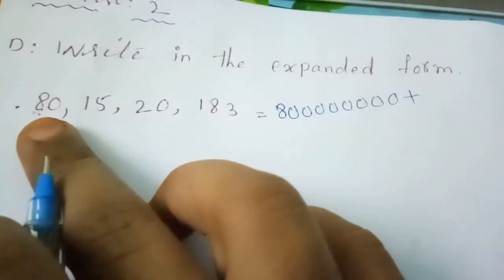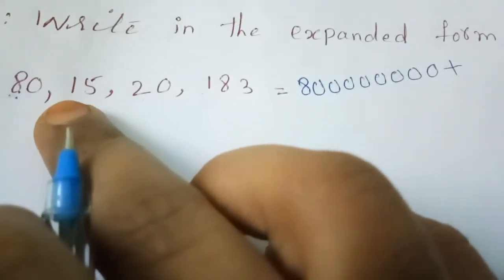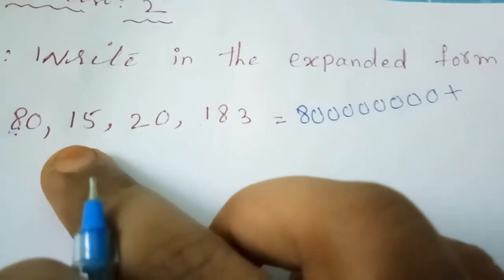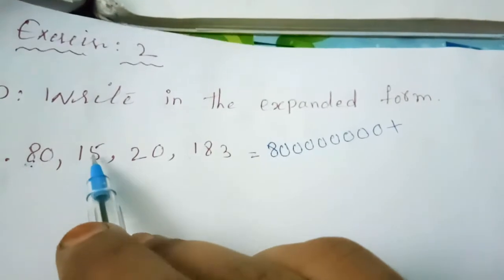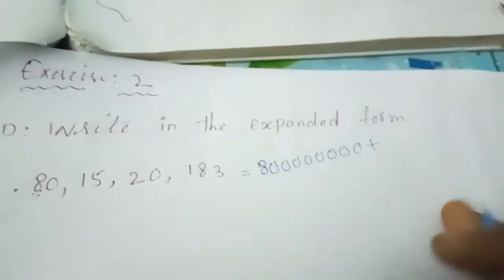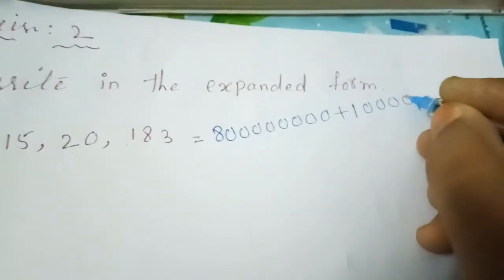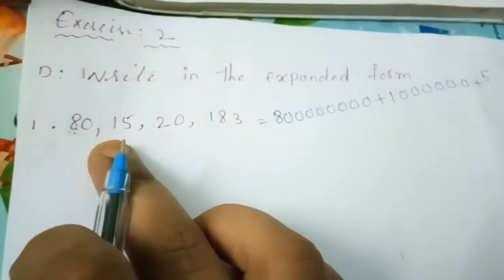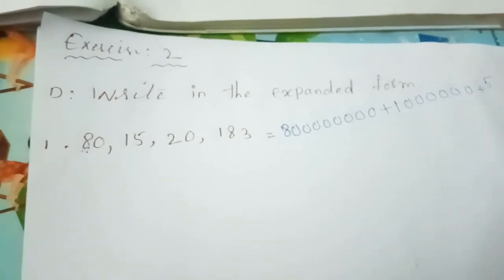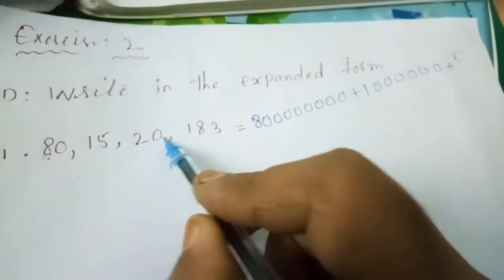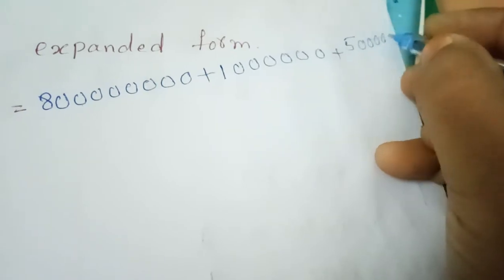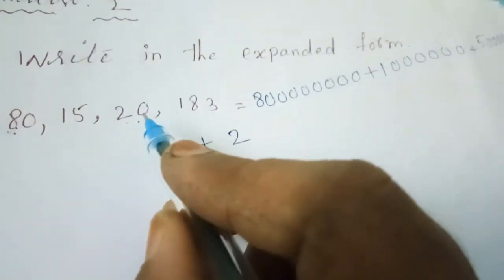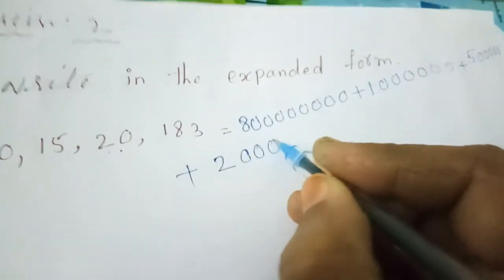On the crore place there is nothing, so we don't write that. Next is 15 lakh. First, ten lakh — how many zeros in ten lakh? Six zeros. Write 1 followed by six zeros, then a plus mark. Next digit is 5 in the lakh place — five lakh has five zeros. Write 5 followed by five zeros, then a plus mark. Next is 2 in the ten thousands place — twenty thousand has four zeros. Write 2 followed by four zeros, then a plus mark.